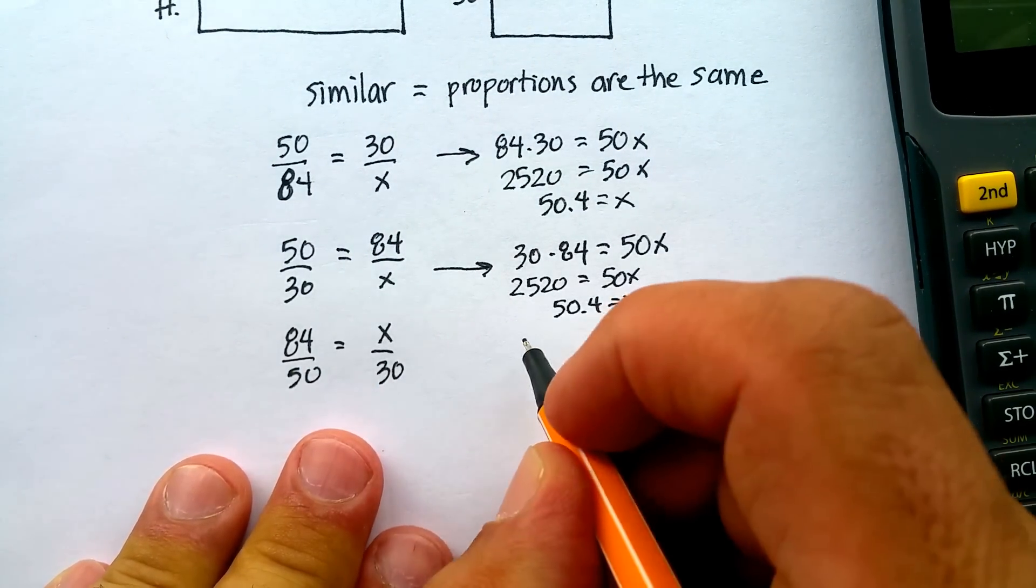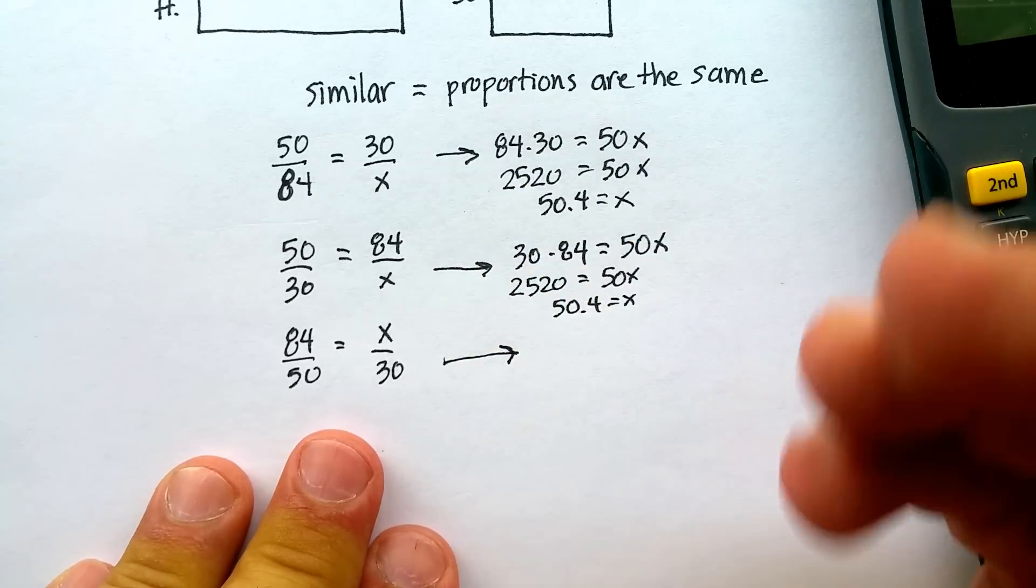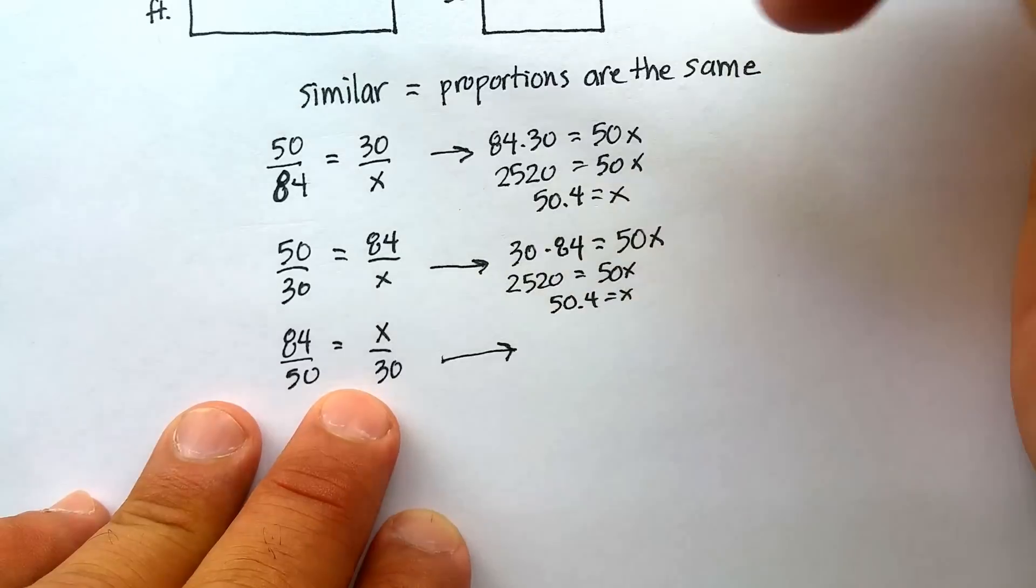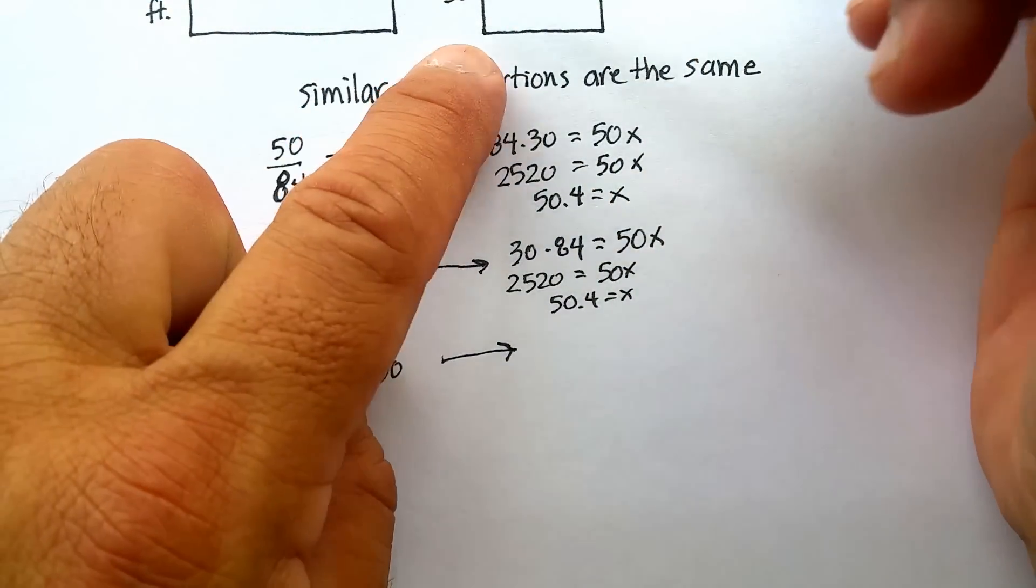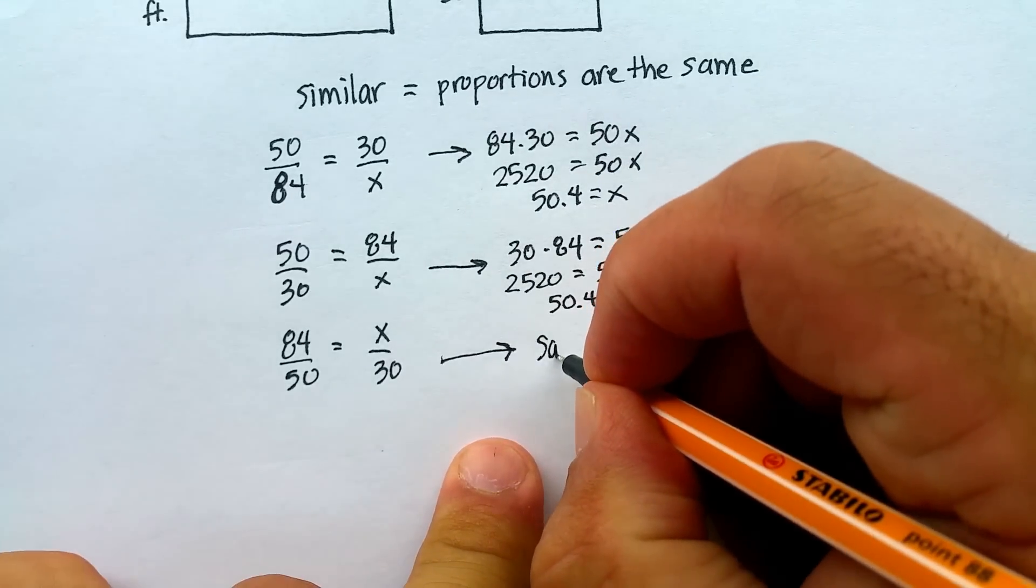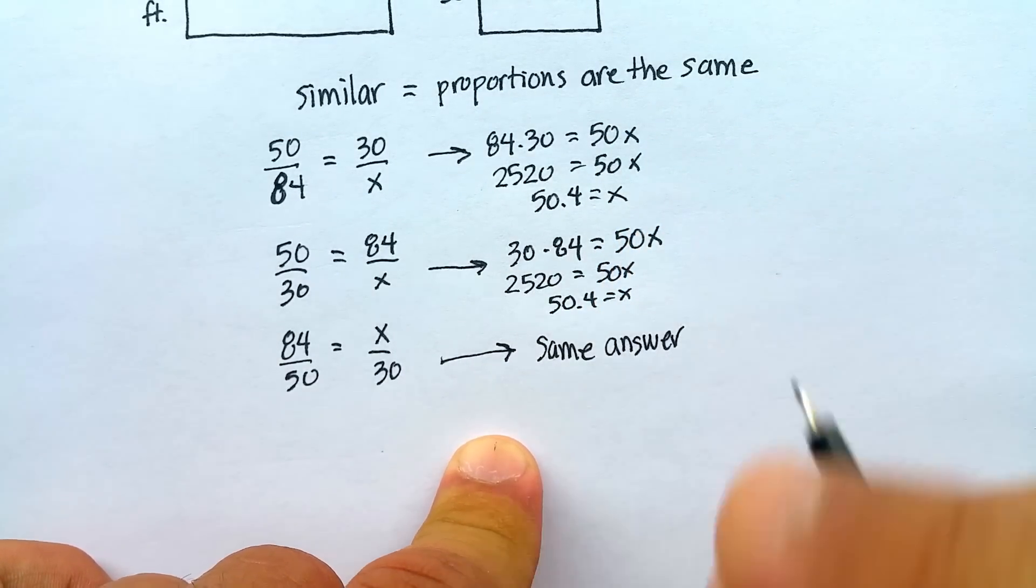I have 84 times 30. 84 times 30 would give me the exact same thing, wouldn't it? So the point is I can actually compare similar sides. I can actually compare similarity within the figure itself. All of them will lead to the same answer. And I hope that was helpful to you. Thank you.